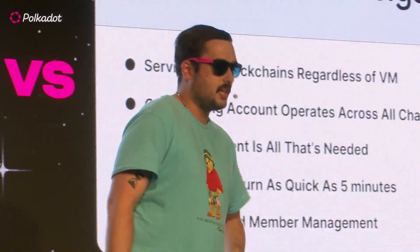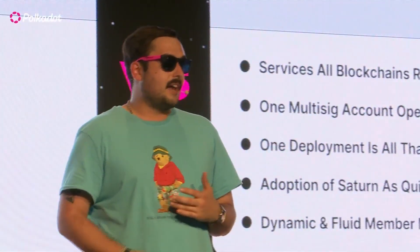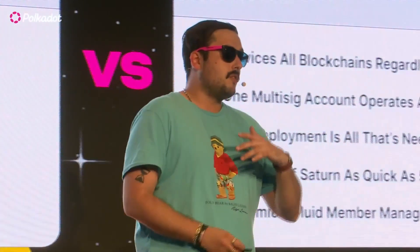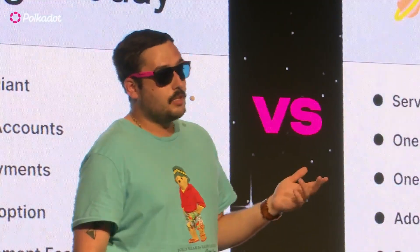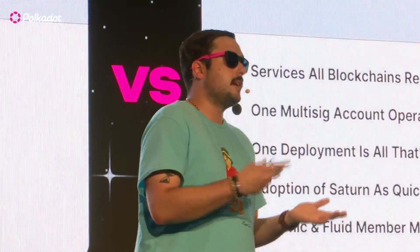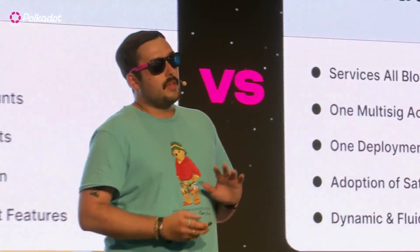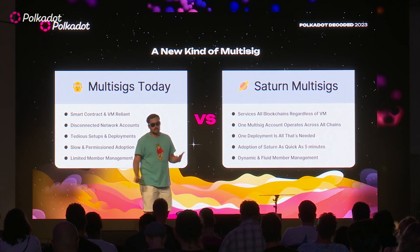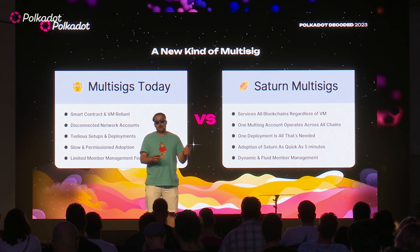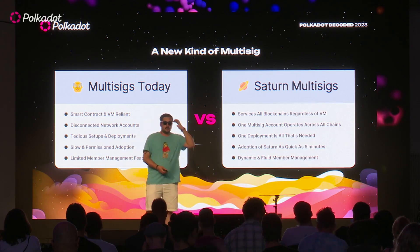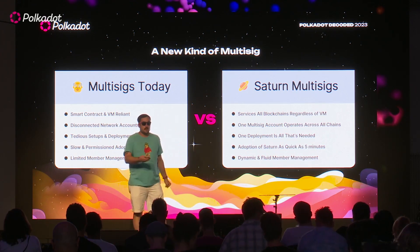With Saturn, it completely changes the game. Saturn is one multi-sig, any blockchain. It's able to service any blockchain regardless of whether it has a virtual machine. In the Polkadot ecosystem, it has the multi-sig and pallet proxies — if chains don't have those, they're not able to get multi-sig support from current solutions. Saturn is not limited by the existence or lack thereof of those pallets.